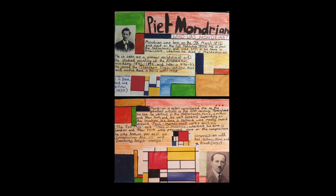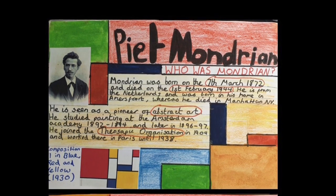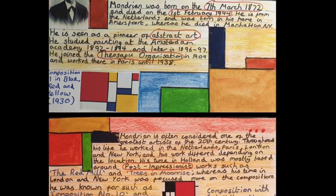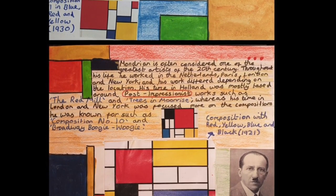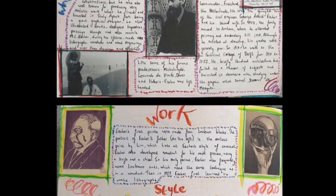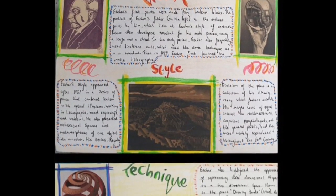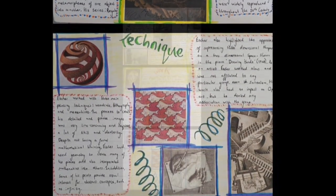The next example is a step up in terms of how well information is arranged and presented on the page. The quality of written information and number of images is about the same, so it gains marks for presentation but gets a similar mark for content — this is an example of a secure piece of work. Finally, we see an example of excellent, probably even excellent-plus work, where the student has researched over three pages with clearly defined sections on who the artist is, their work, style, technique, and specific written work about key pieces of artwork.